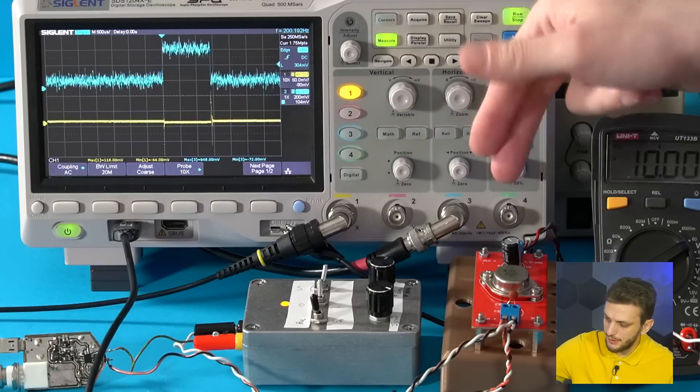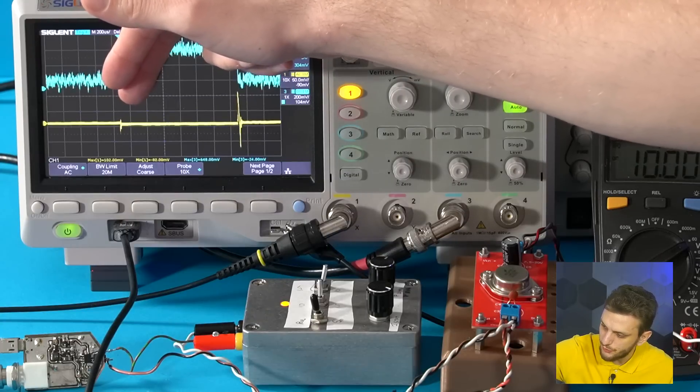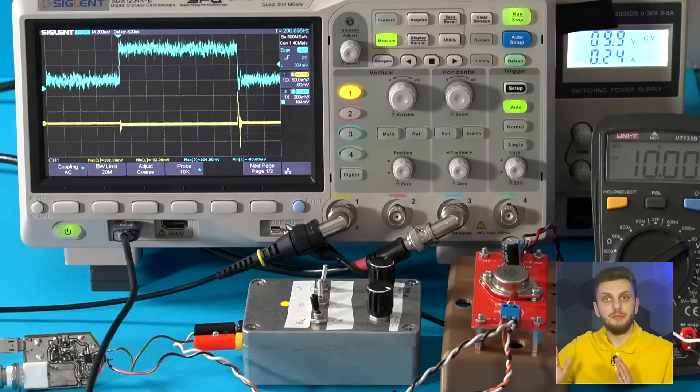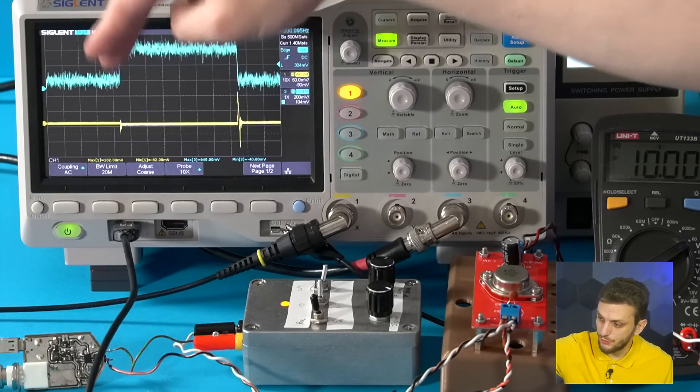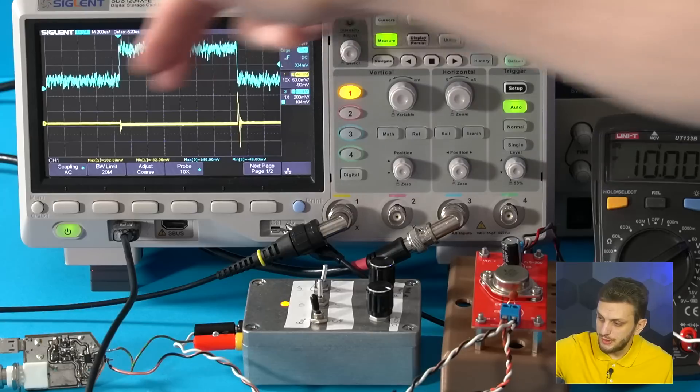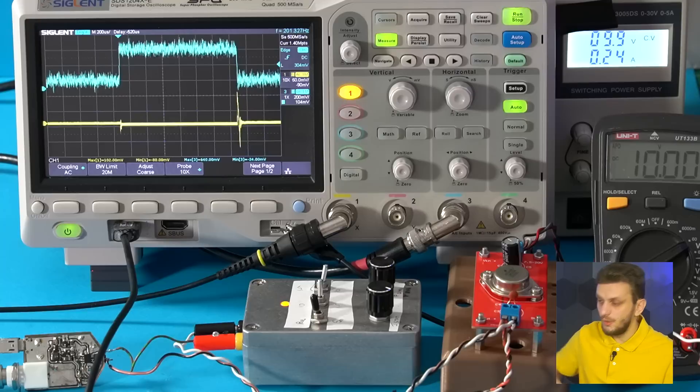is that we need to allow the output voltage of the supply to stabilize before the next transition occurs. So the timing between the two transitions, from low current to high current and from high current to low current, should be timed so that the power supply has enough time to recover and stabilize.